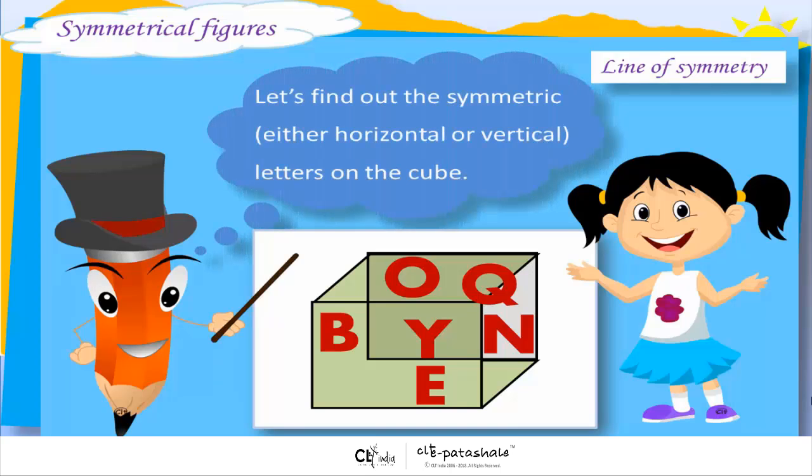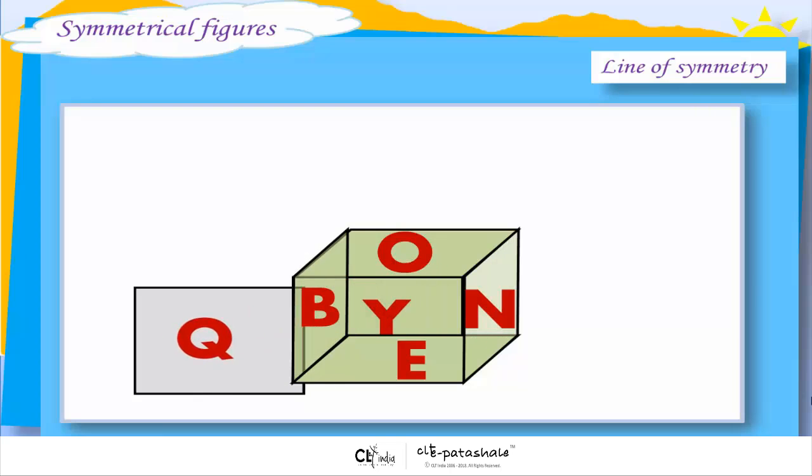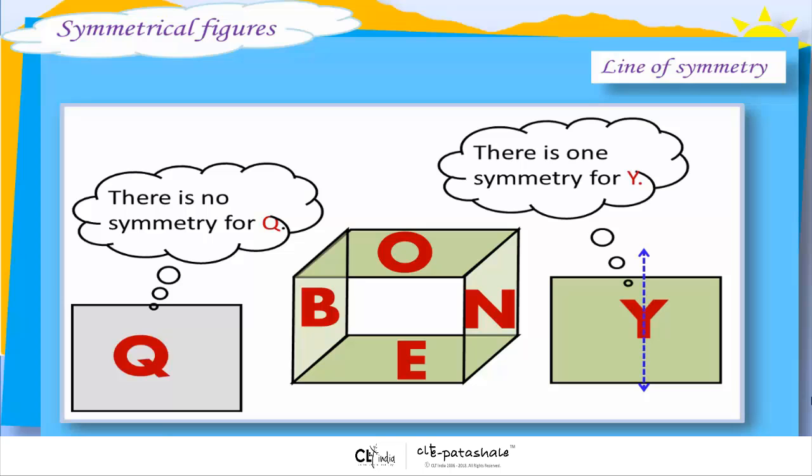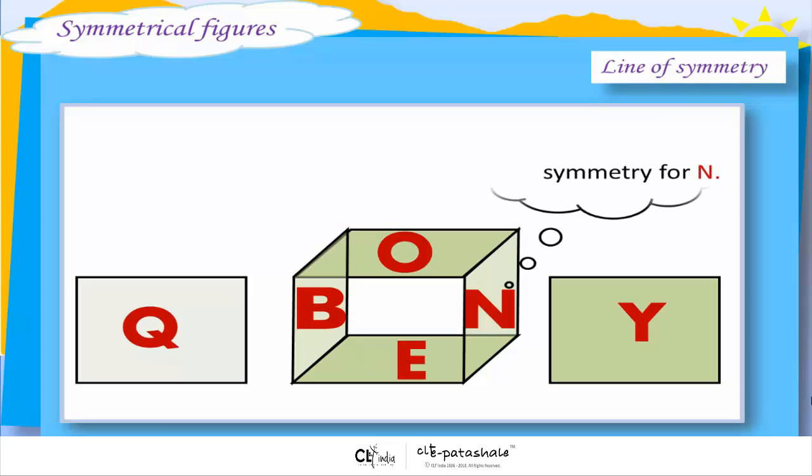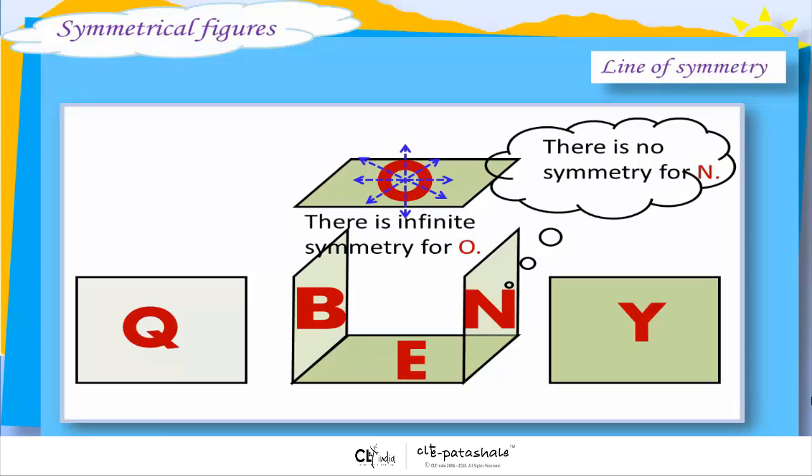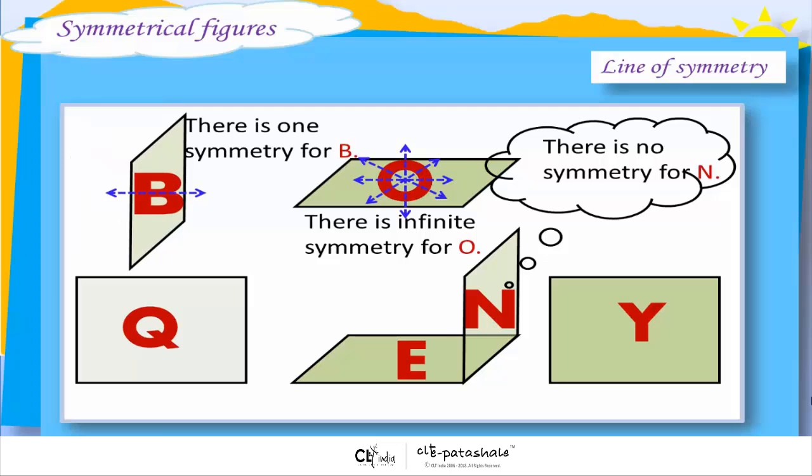Let's find out the symmetric letters on the cube, either horizontal or vertical. There is no symmetry for Q. There is one symmetry for Y. There is no symmetry for N. There is infinite symmetry for O. There is one symmetry for B.